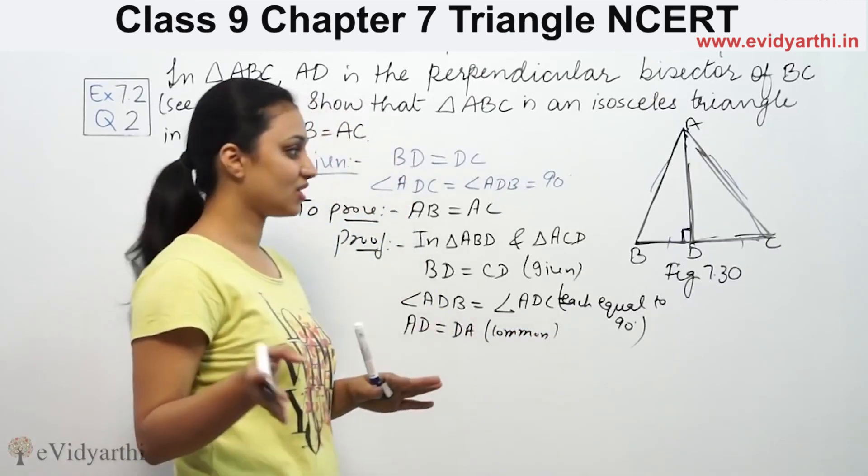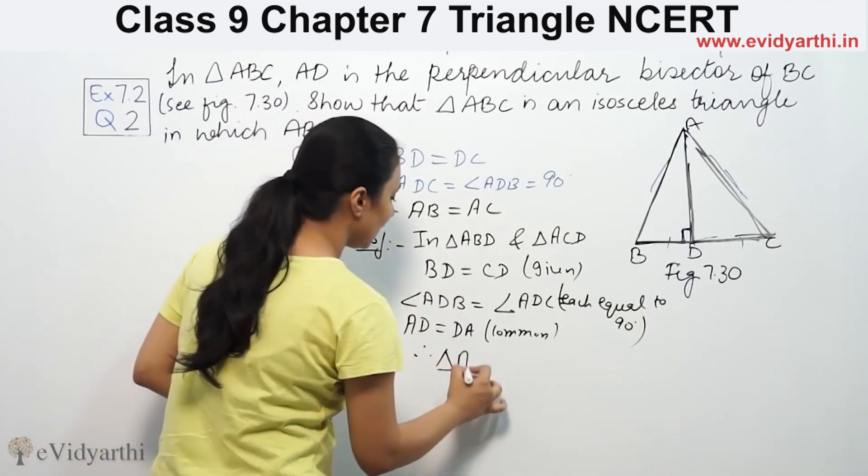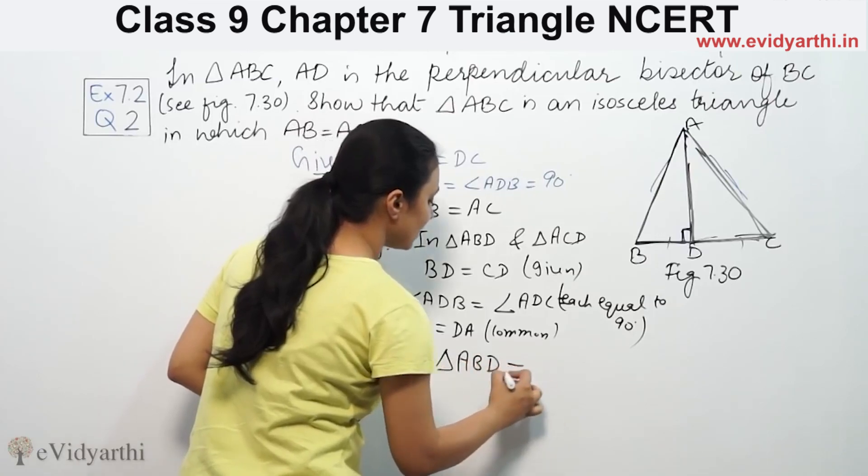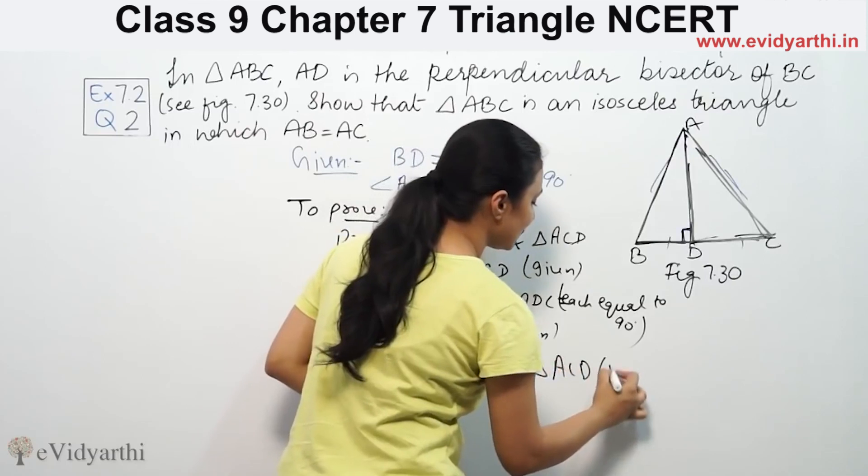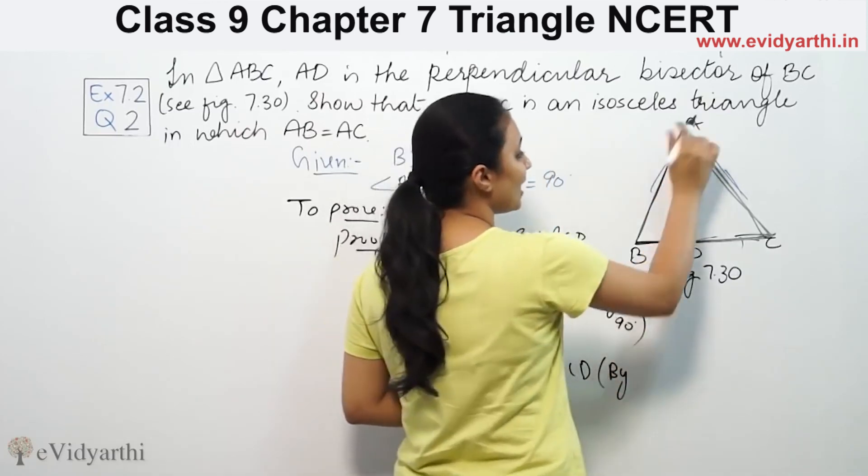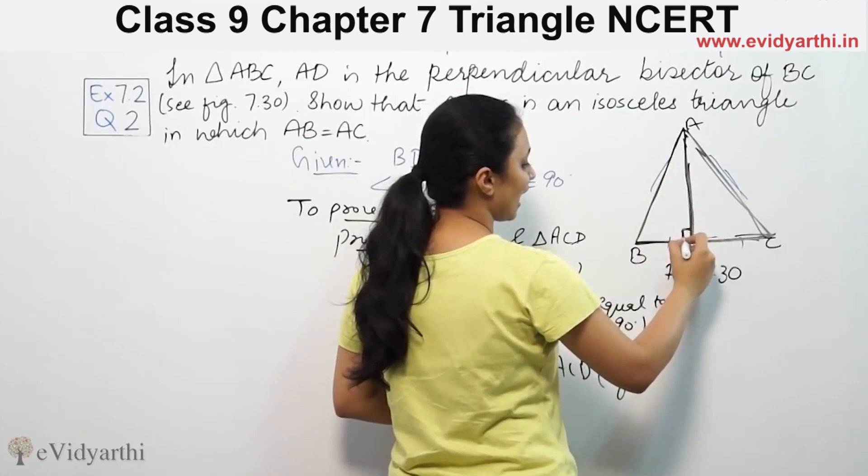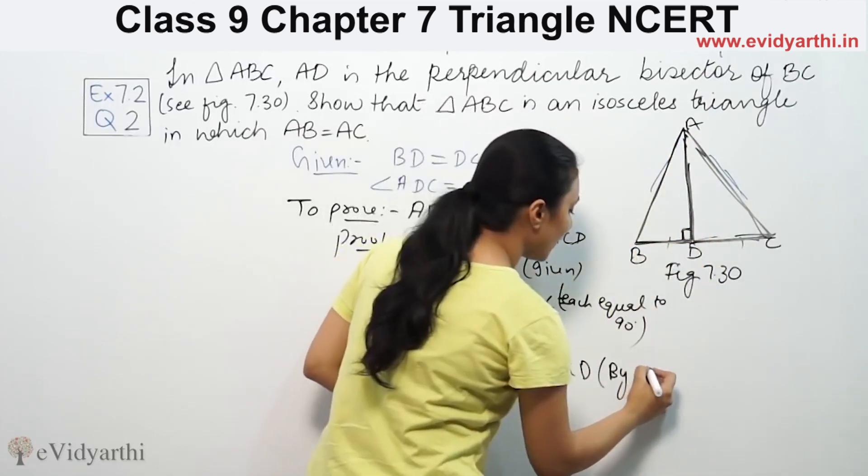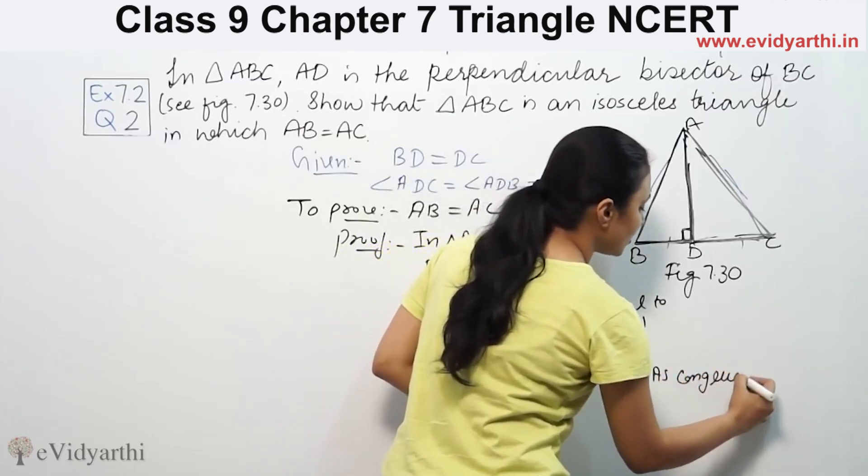We have three things come together, so these two triangles will be congruent. Therefore, triangle ABD is congruent to triangle ACD. In one triangle we have one side, then we have one angle, then we have one side. Therefore, by SAS congruency rule.